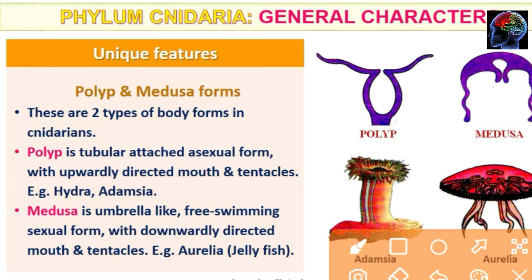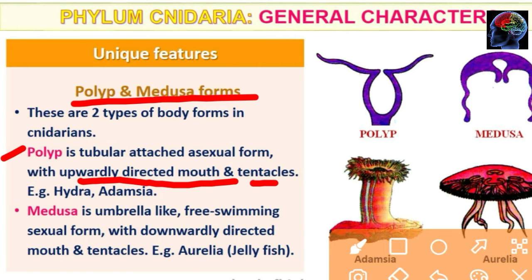The next unique feature is the two body forms: polyp and medusa. The polyp is a tubular, attached, asexual form with an upward directed mouth and tentacles. Examples of polyp forms include sea anemones and Hydra.